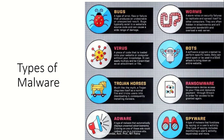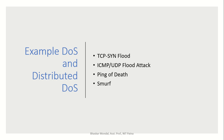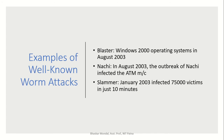Examples of DoS and distributed DoS attacks include TCP SYN flood, ICMP/UDP flood attacks, ping of death, and Smurf attacks. Well-known worm attack examples include Blaster, which came in 2003 and targeted Windows 2000 operating systems.